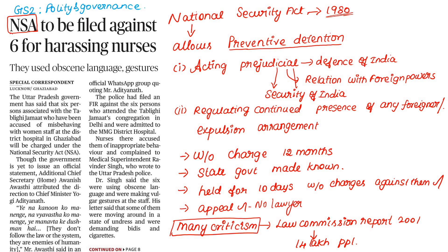The National Security Act was enacted in 1980 during the Indira Gandhi period. This is a Preventive Detention law. Preventive Detention means detaining someone before they commit an offence - to prevent harm before it happens.